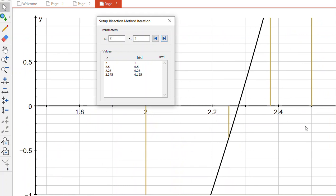So if I do my next iteration, I've now gone from 2.25 to 2.375 and I've got an interval size of 0.125, and I'm going to just keep going.